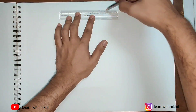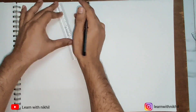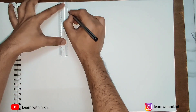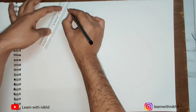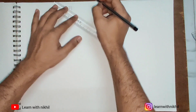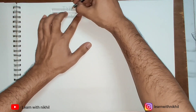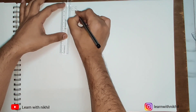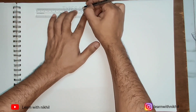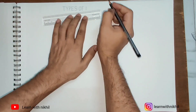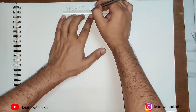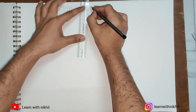We'll write the title at the top. For that we will draw two parallel lines with a height of one centimeter, and between those lines we will write the title of our drawing: Types of Lines. Drawing is all about accuracy — the distance and height should be proper between all the words you write.